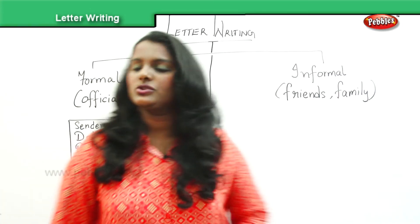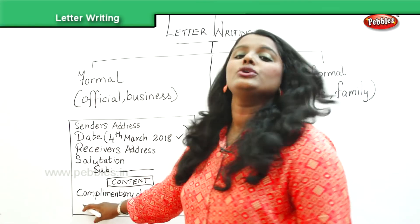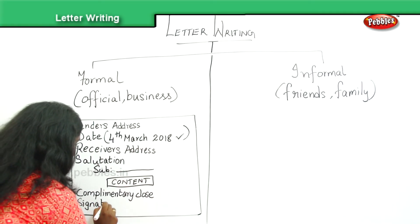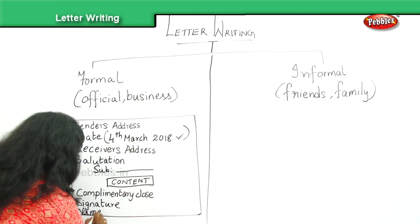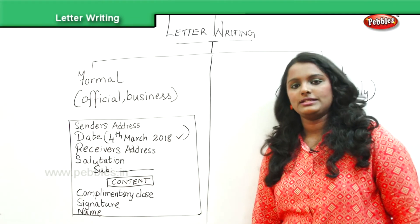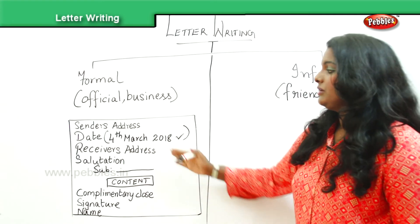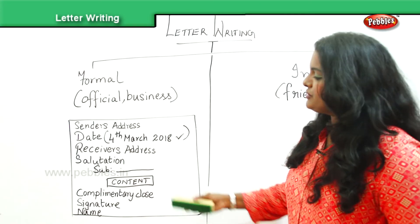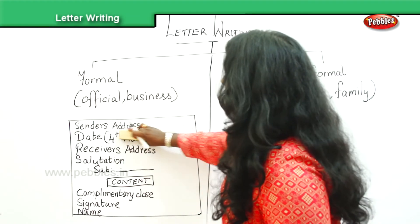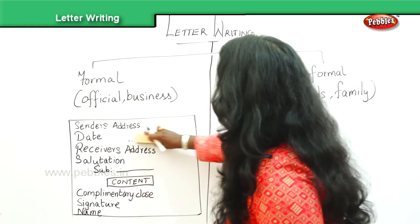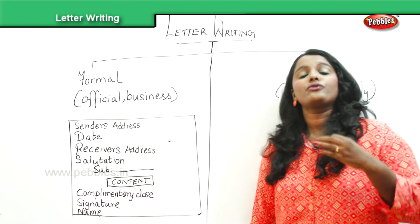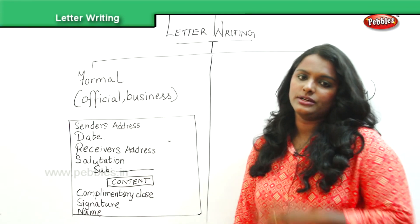When you finish, you write the complimentary close — 'Thanking you' comes under the complimentary close — then your signature, and then your name beneath the signature. So this is the simple layout for a formal letter: sender's address, date, receiver's address, salutation, subject, content, complimentary close, signature, and name. This is the format expected from you when you write a formal letter.